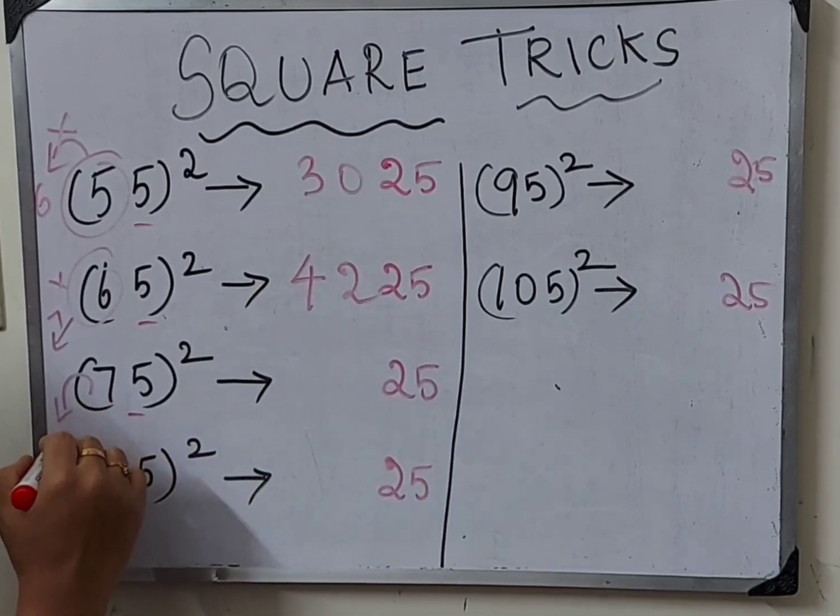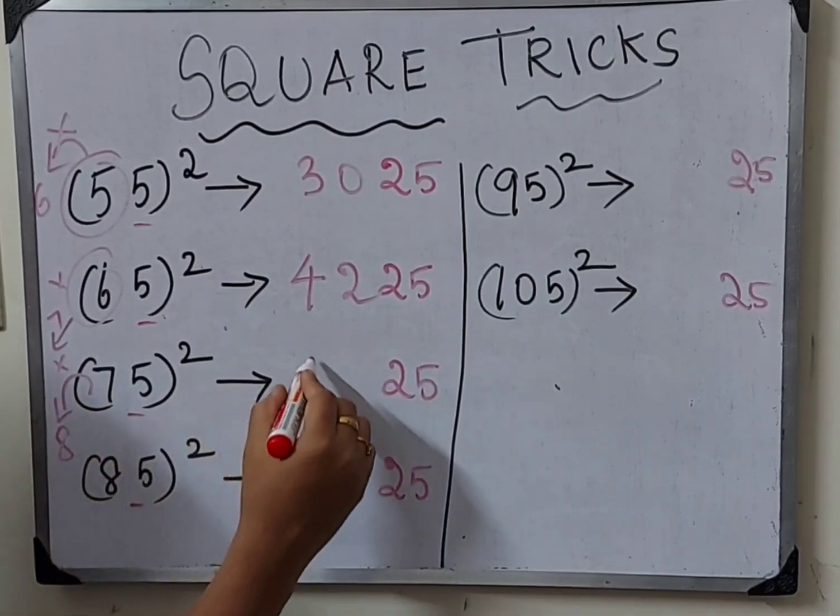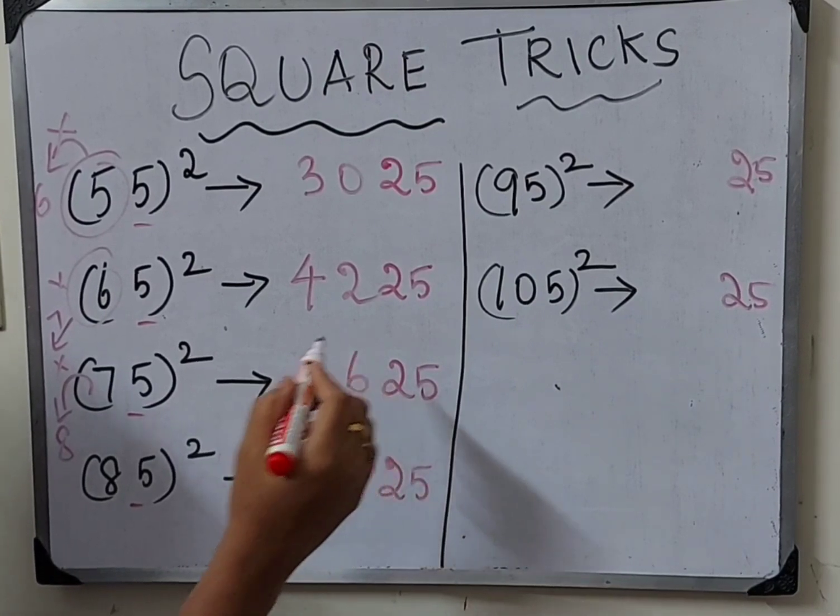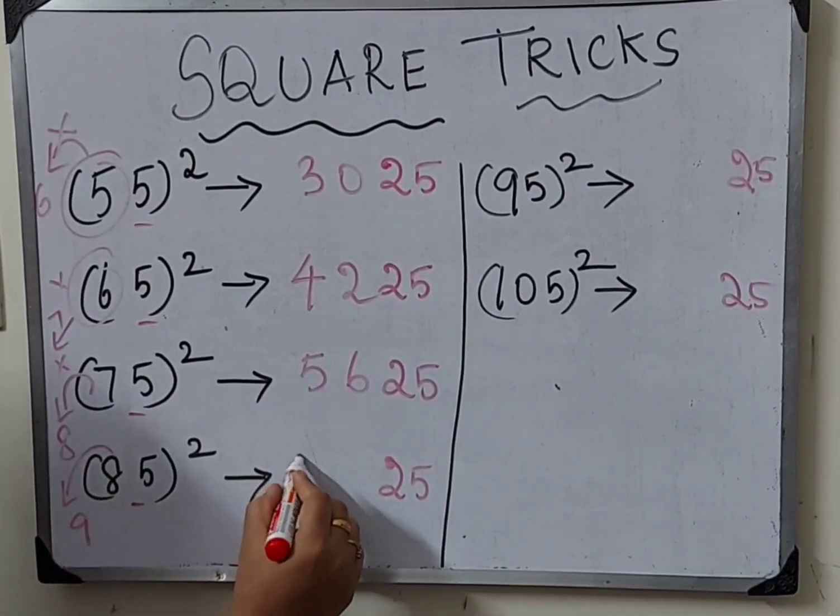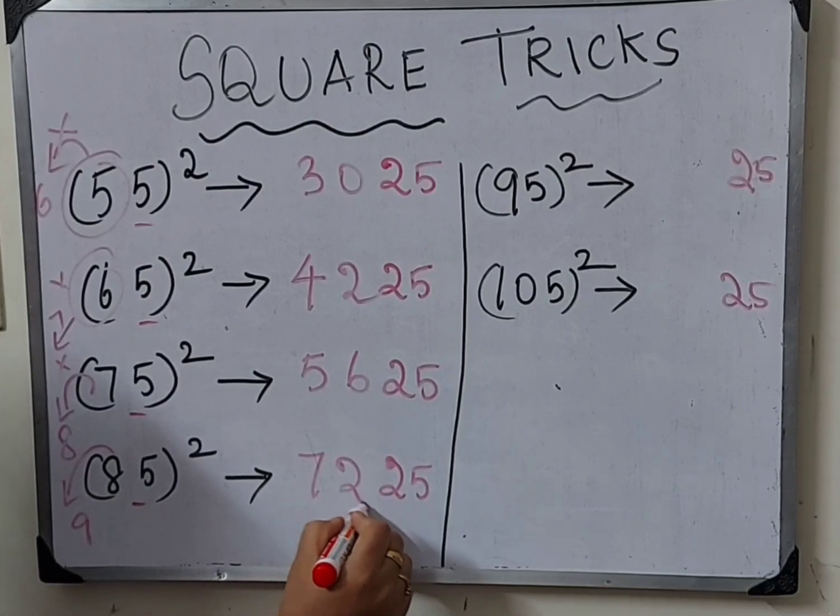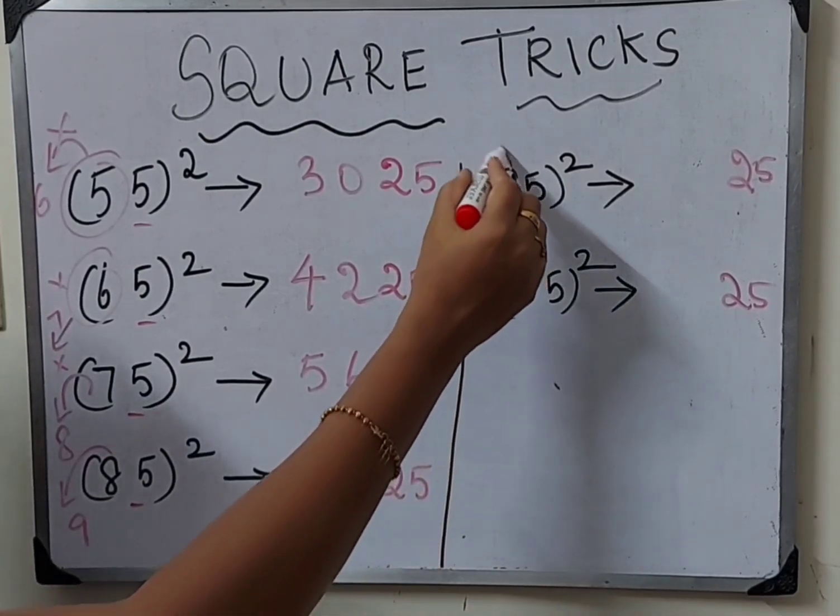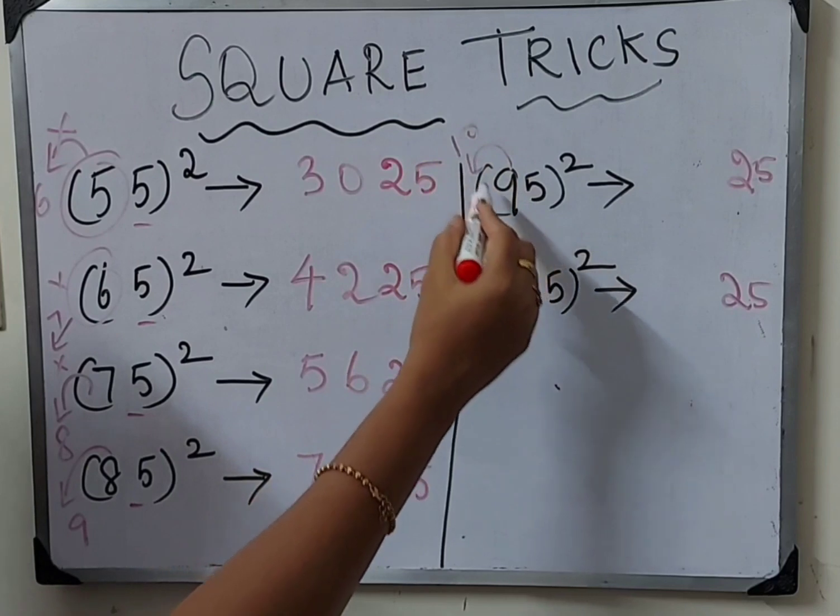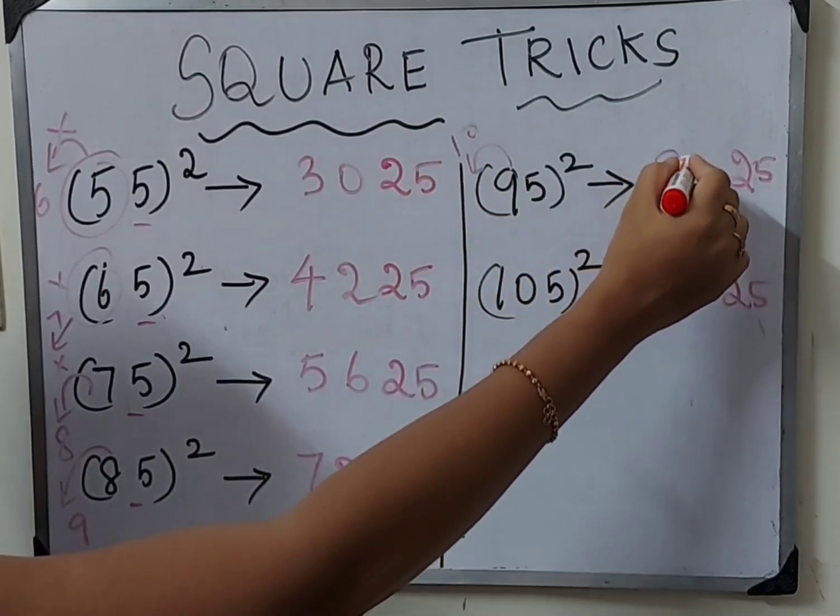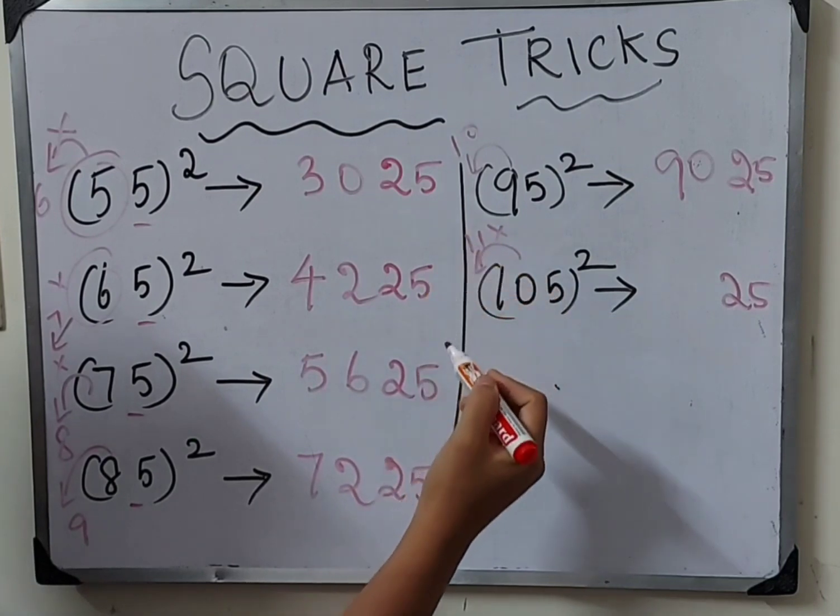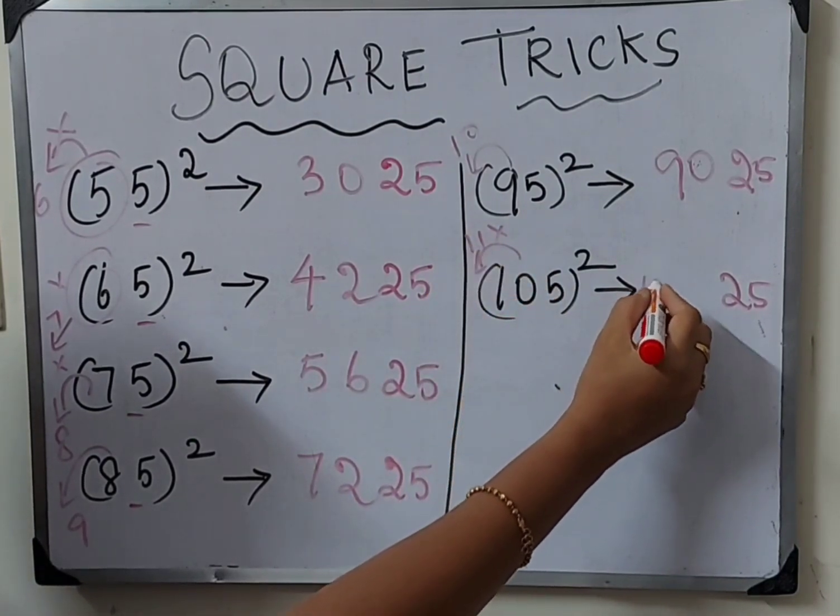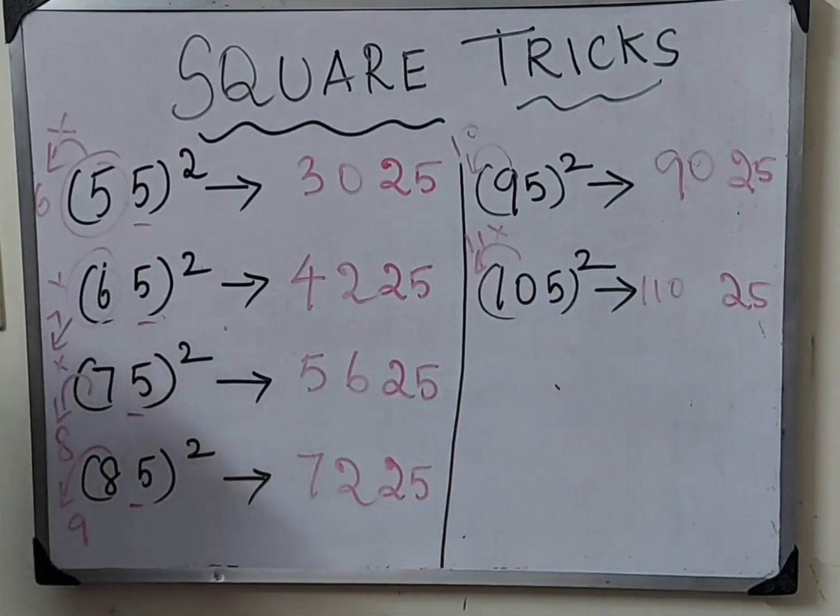Answer is 4225. For 75 square, 7 after number is 8, 7 times 8 is 56, so 5625. For 85 square, after 8 is 9, so 7225. Then 95 square, 9 after number is 10, so 9 times 10 is 90, giving 9025.